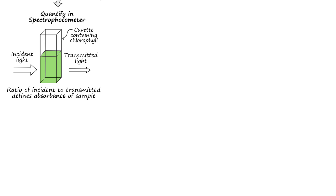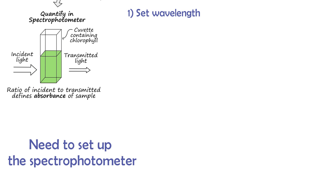The ratio of these measurements is used to define an absorbance value, which we'll read directly from the spectrophotometer. Before measuring the absorbance of the chlorophyll sample itself, we need to define zero on the spec and tell it which wavelength of light to measure at.